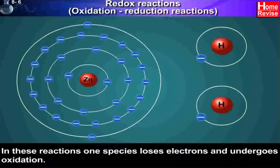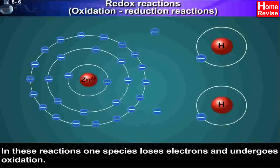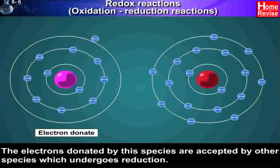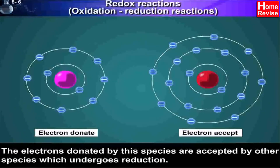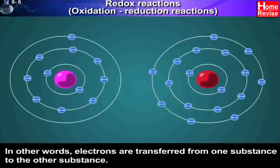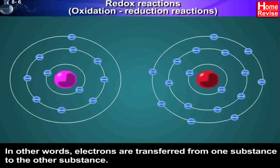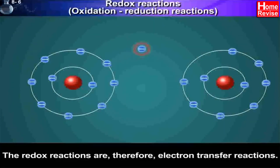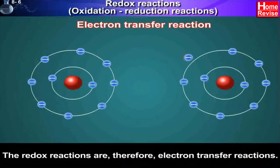In these reactions, one species loses electrons and undergoes oxidation. The electrons donated by this species are accepted by another species, which undergoes reduction. In other words, electrons are transferred from one substance to the other substance. Redox reactions are, therefore, electron transfer reactions.